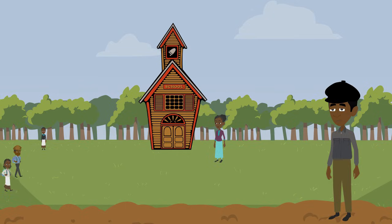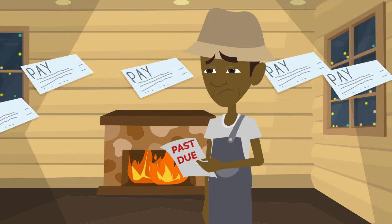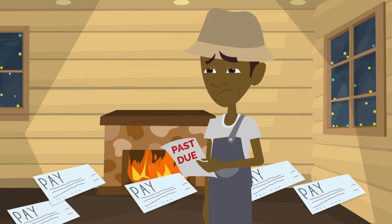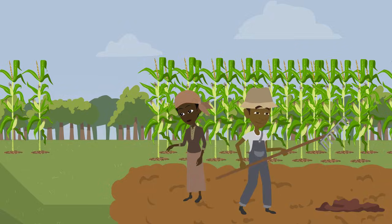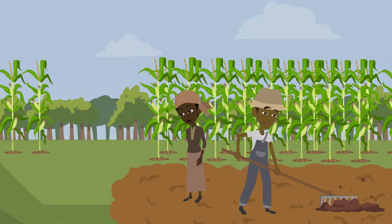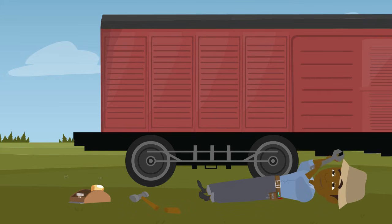When Garrett Morgan was 10 years old, he had to leave school. Garrett's parents needed him to earn money for the family. He grew up in Claysville, Kentucky. His parents had been formerly enslaved. Now his father worked on the railroad and his mother took care of the family.